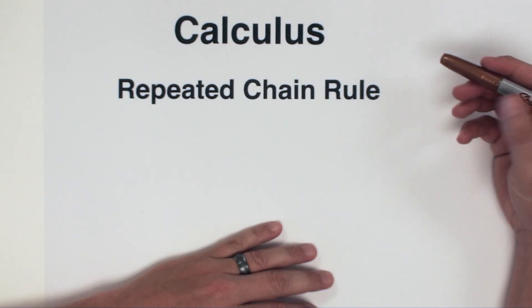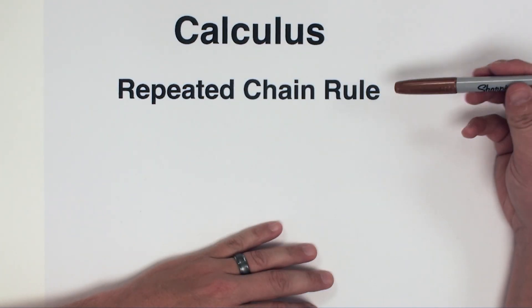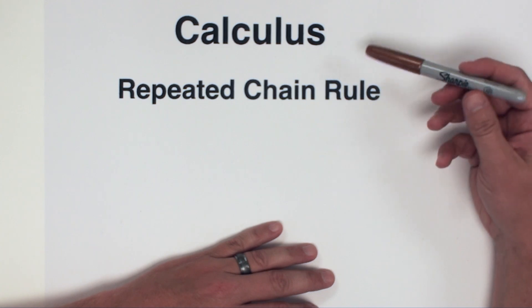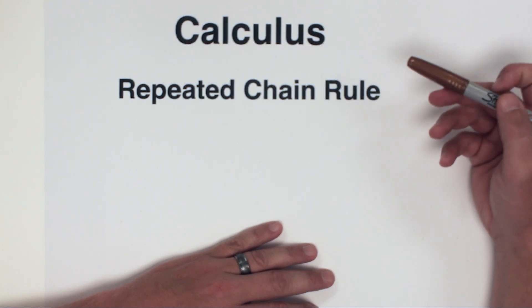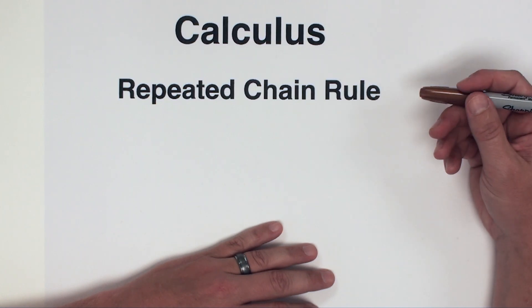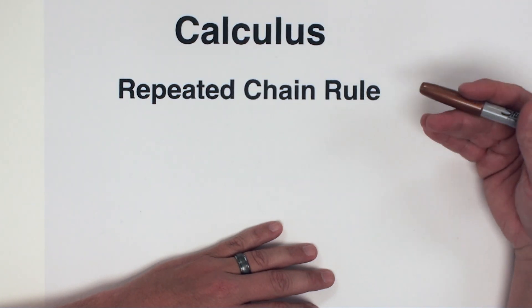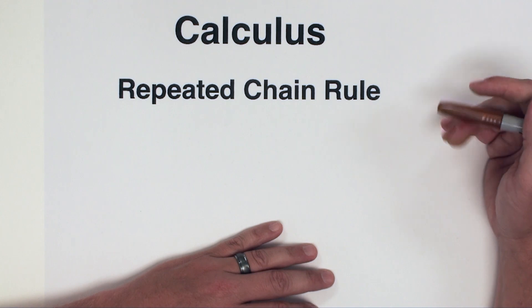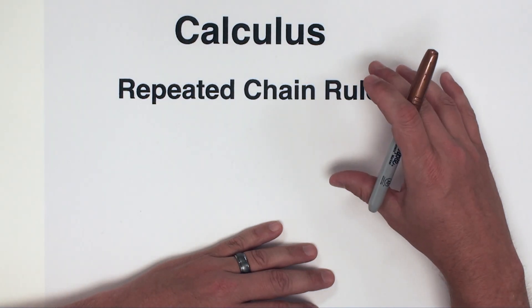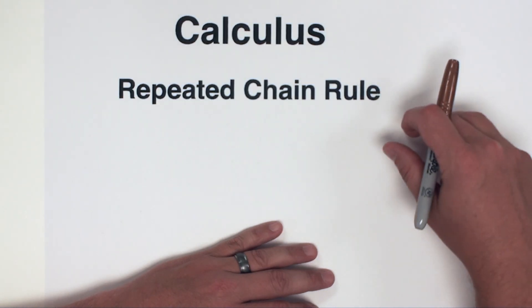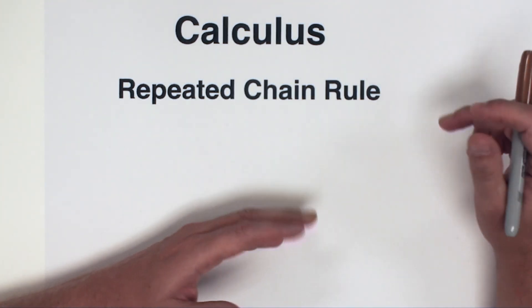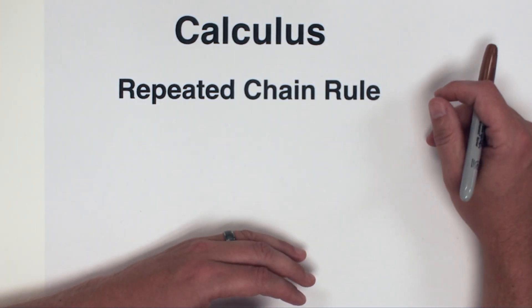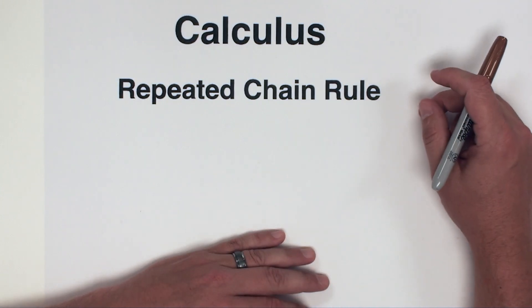Hello everyone and welcome to another math tutorial. In this video we're going to continue our discussion on the chain rule in calculus, and I'm going to show you some problems where we have to do the chain rule more than once — a repeated chain rule. It's not just a function within a function, but maybe a function within a function within another function. So we're going to see multiple layers of compositions of functions. Let's jump right into the first example problem.